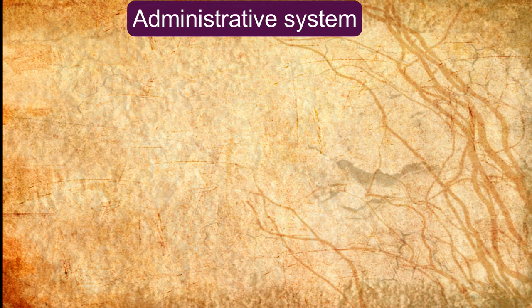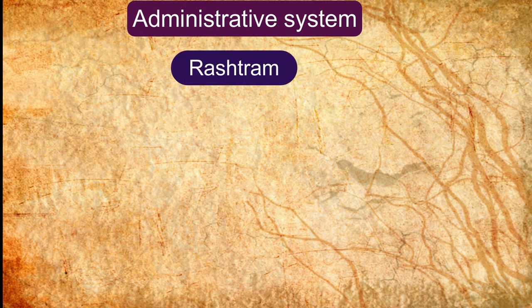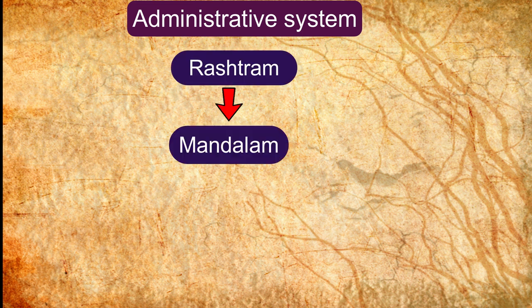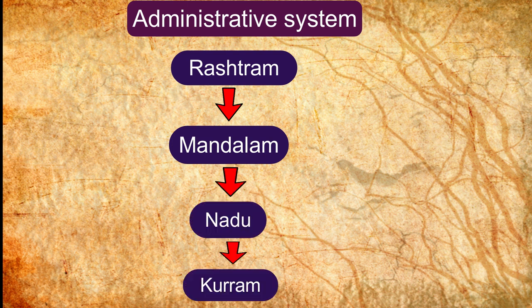Let us see the administrative system of that period. The whole kingdom was divided into Rashtram or Empire, Mandalam or Province, Nadu or District, and Kuram or Village. Kuram was the smallest unit.